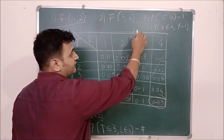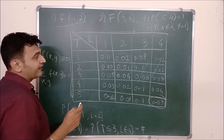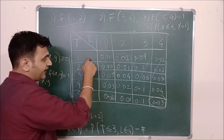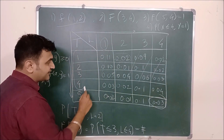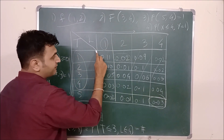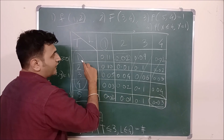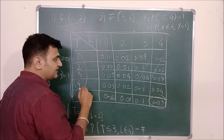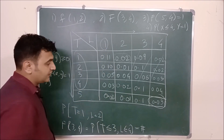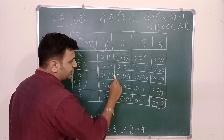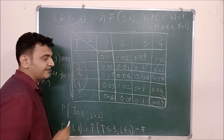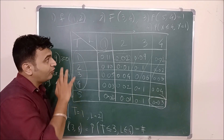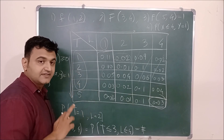For the 4th calculation: the probability that Y = 1 and X ≤ 4 means summing f(1,1) + f(2,1) + f(3,1) + f(4,1). So you add those 4 entries, and that is the answer.